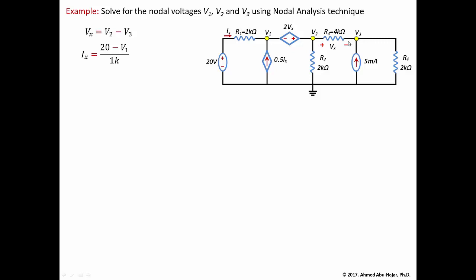So all we've done so far is found vx and ix in terms of the nodal voltages v1, v2, and v3. This is an extremely important step in nodal analysis — always define the dependent parameters in terms of the nodal voltages. The first trick in this problem is defining vx and ix that way.